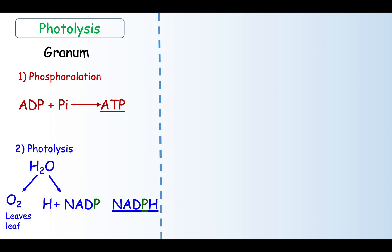Remember in respiration you had NAD and NADH. In photosynthesis you're adding in a P so you've got NADP and NADPH.